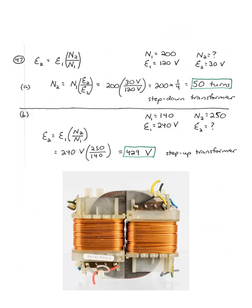And finally, number 47 is about a transformer, and you can see at the bottom of the page a transformer with the two different coils of wire. So, here, it says 120 volt EMF is across a transformer's 200 turn primary coil. How many turns should the secondary have in order to produce a 30 volt EMF? So, this is a step-down transformer that is cutting the voltage by a factor of four. And so, it's going to cut the number of turns by a factor of four as well.